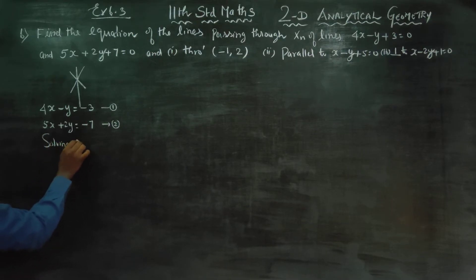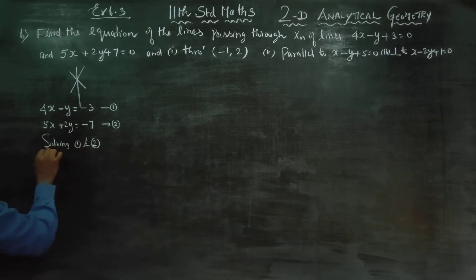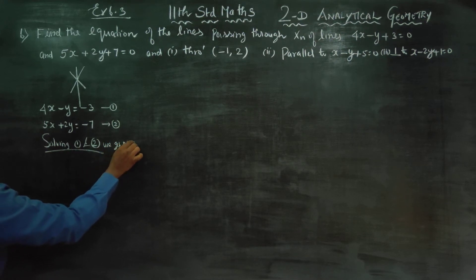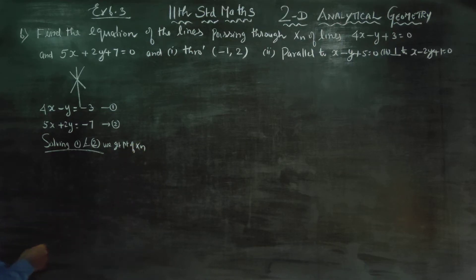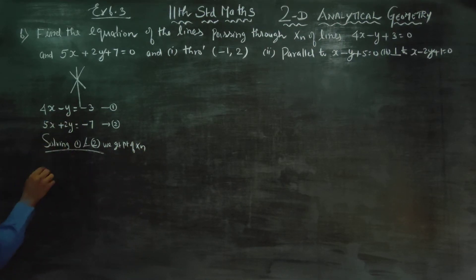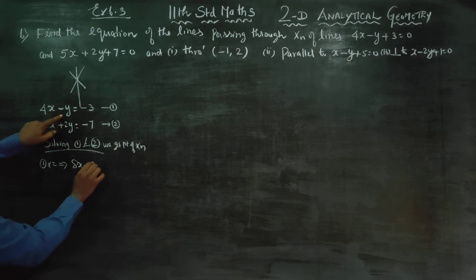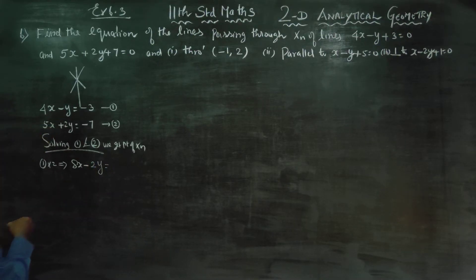Solving equations 1 and 2, we will get the point of intersection. How do we solve? Multiply the first equation by 2: you will get 8x minus 2y is equal to 6.